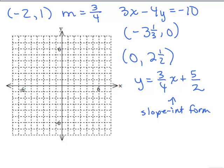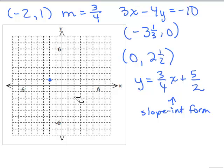Let's graph this. I know that negative 2, 1 was given, so I'll start by putting that ordered pair there, and then use the slope to find more points — rise over run. The run is 4, so 4 to the right and 3 up. That's why it's nice to have all this information — it's easier to find your mistakes. So I'm going 4 to the right and 3 up.